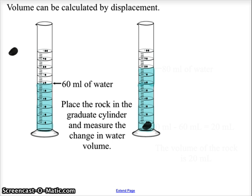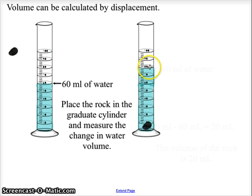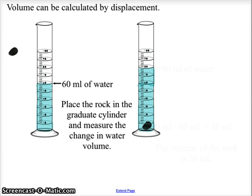Now we have a difference of 20 milliliters. The water level rose from 60 up to 80 milliliters, so that means this pebble has a volume of 20 milliliters.